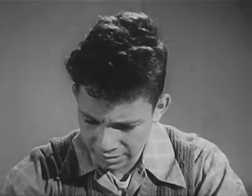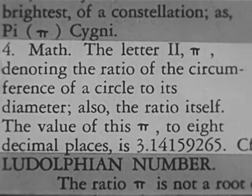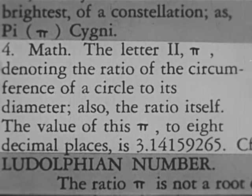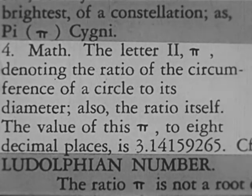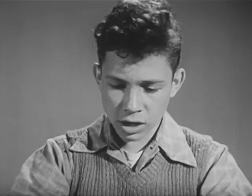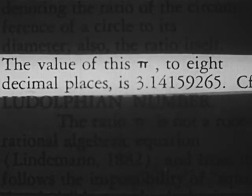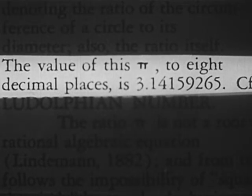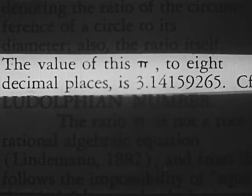We usually use 3.14 as pi. I didn't need to measure the circumference — to find the circumference, I could have just measured the diameter and multiplied by 3.14. Pi — mathematical — the letter pi denoting the ratio of the circumference of a circle to its diameter. I've read that a dozen times before and didn't know what it meant. The value of pi to eight decimal places is 3.14159265.